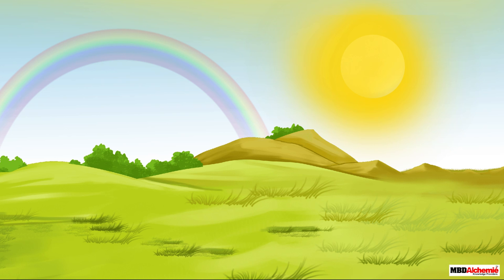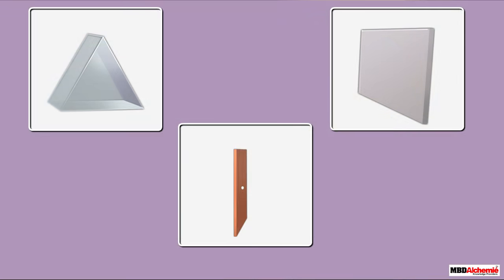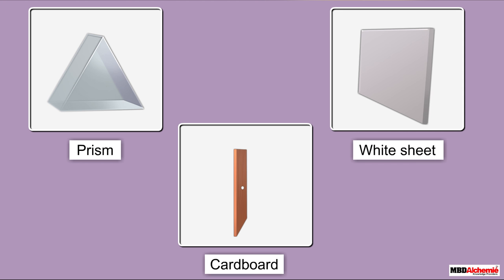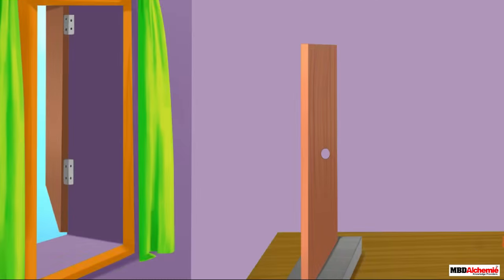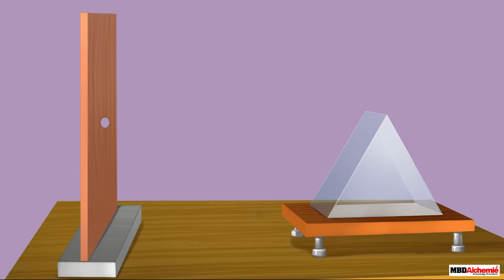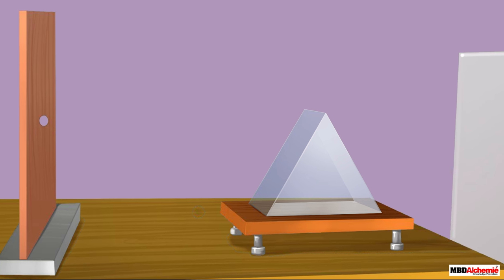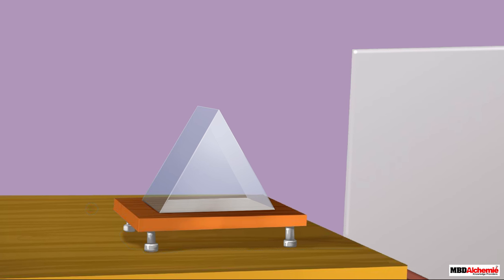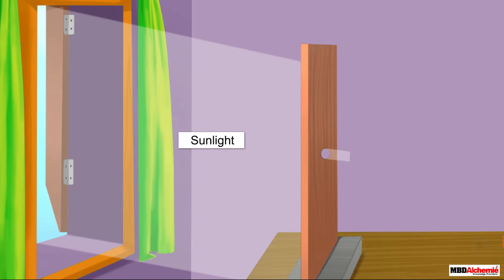To understand what dispersion of light is, let us perform an activity. For the activity you need a prism, a white sheet, and a cardboard with a small hole at its center. Place the cardboard such that sunlight falls directly on it, then keep the prism so that the light passing through the hole falls on its surface.